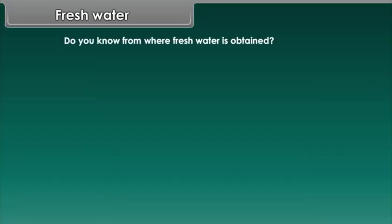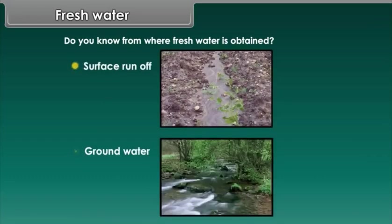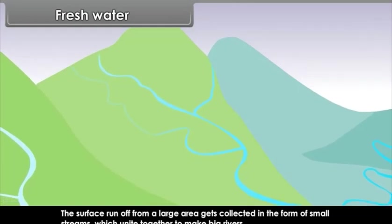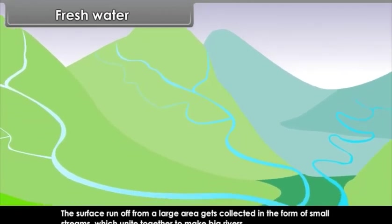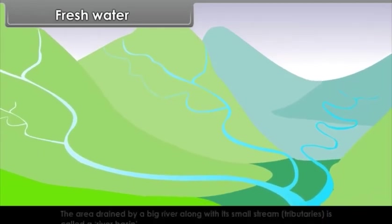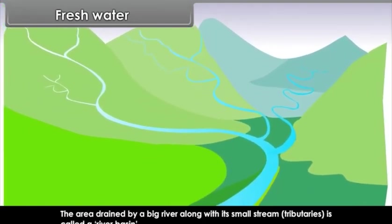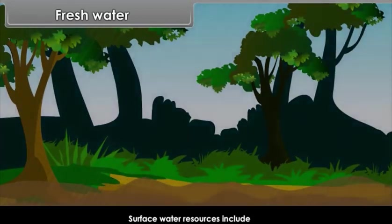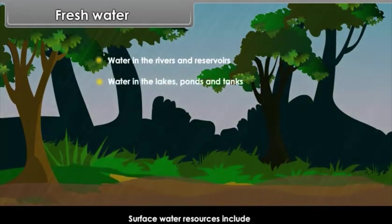Do you know from where fresh water is obtained? Surface runoff and groundwater. Surface water is the overland flow of rainwater, the surface runoff. The surface runoff from a large area gets collected in the form of small streams which unite together to make big rivers. The area drained by a big river along with its small streams and tributaries is called a river basin. Surface water resources include water in the rivers and the reservoirs, water in the lakes, ponds and tanks, water in the seas and water in the oceans.